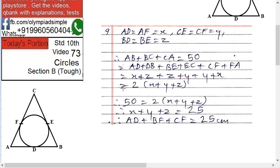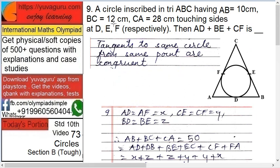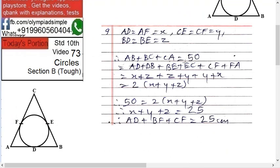Therefore, AB plus BC plus CA equals 50. The values are given: 12, 28, and 10. Add them, you get 50. AB is AD plus DB, similarly BC is BE plus EC, and CA is CF plus FA. That equals 50.